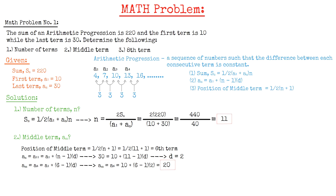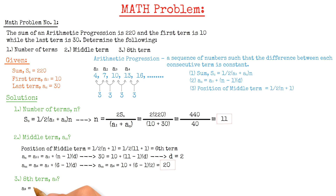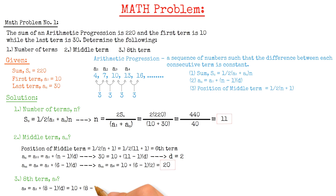Moving on to the last question, that is to find the 8th term. We have a8 equals 10 plus (8 minus 1) multiplied by 2. That gives us the 8th term equals 24.